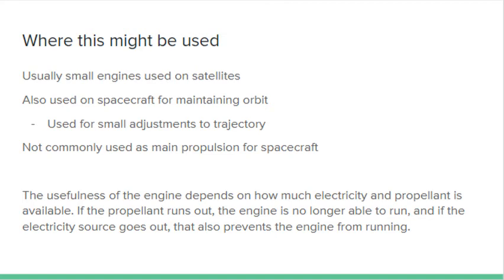If the electricity source goes out, such as when a satellite goes behind the shadow of the earth and is no longer able to get energy from its solar panels, the engine will not be able to operate until the electricity source comes back again.